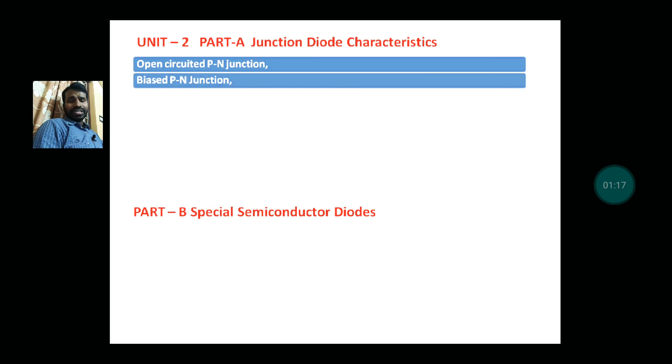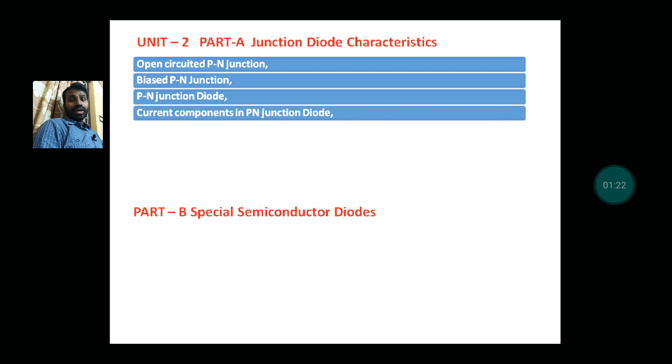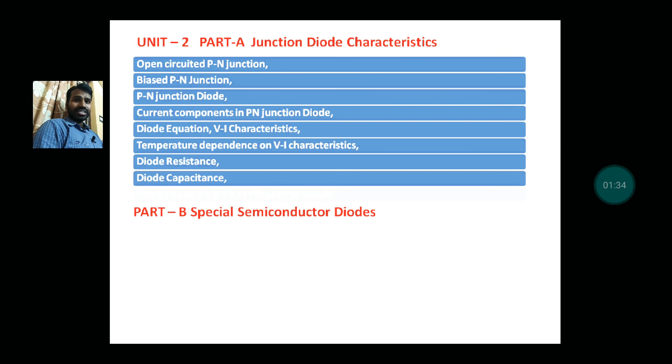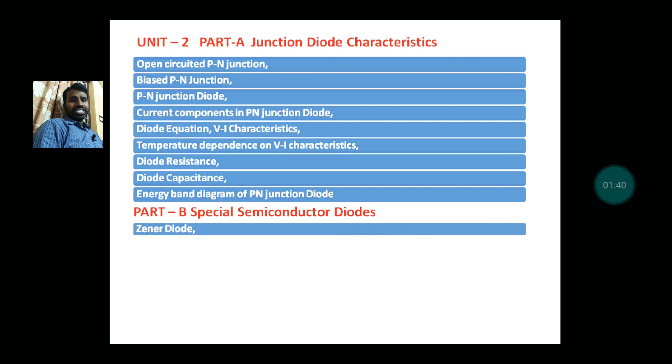Biased PN junction, PN junction diode current components in PN junction diode, diode equation, V-I characteristics of PN junction diode, temperature dependence on V-I characteristics, diode resistance, diode capacitance, and energy band diagram of PN junction diode. In Part B, Zener diode, breakdown mechanisms, Zener diode applications.